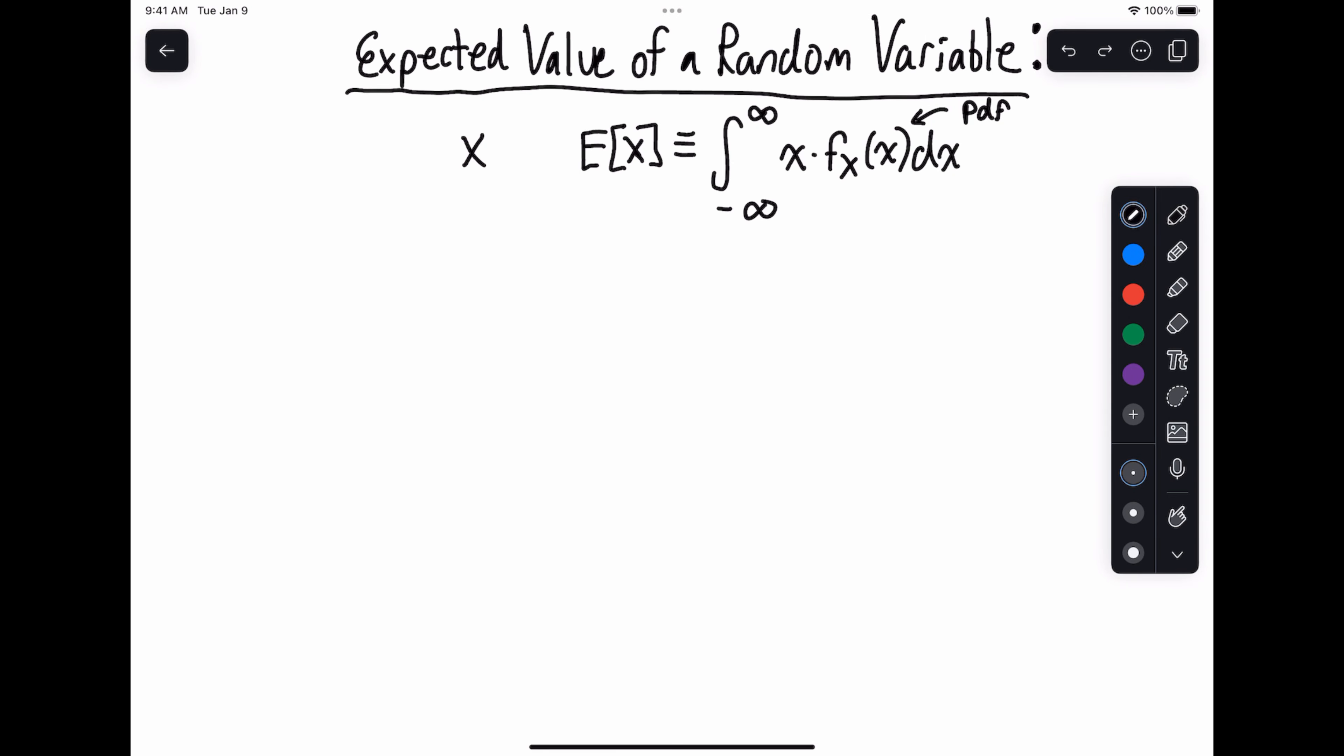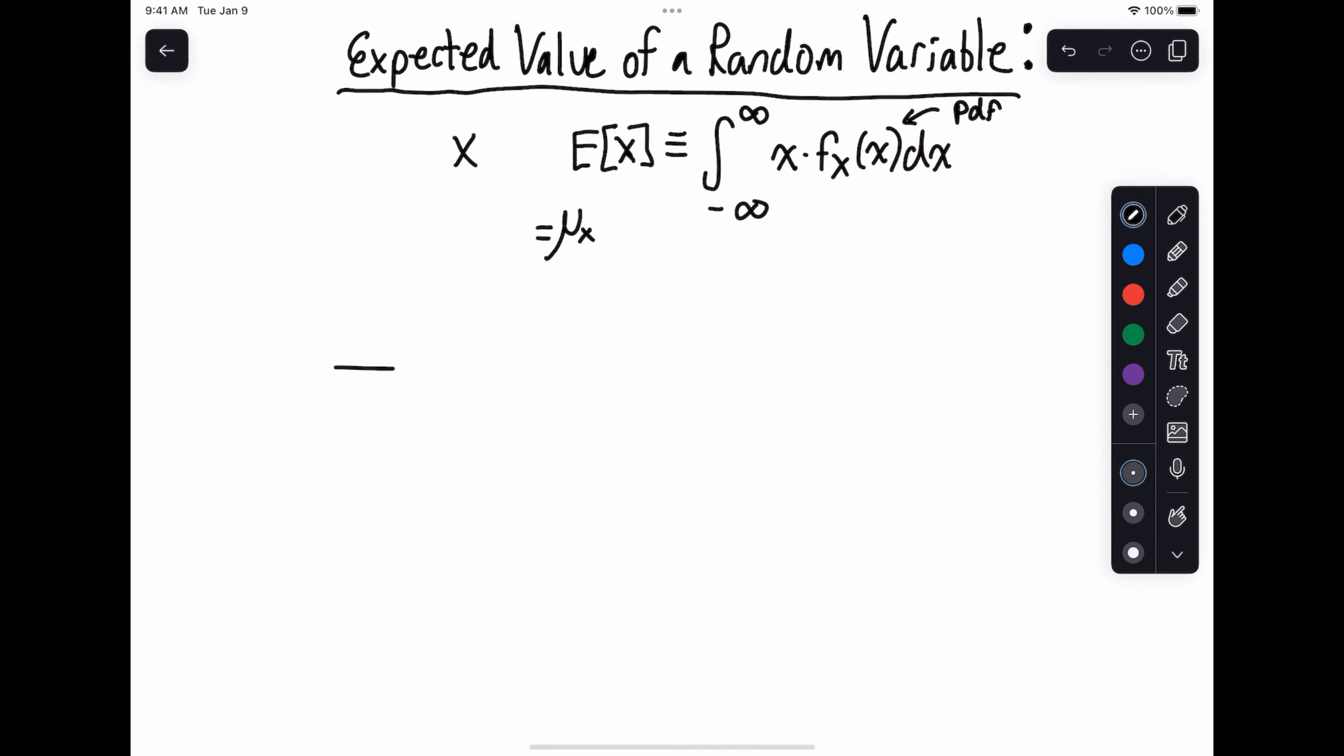And what comes out of this is often a value that we represent as the mean, mu of x is often the way we write it. And what this corresponds to is basically if I was to have some distribution like this, it corresponds to the point at which if you were to put a little triangle on the distribution, the whole thing would balance.